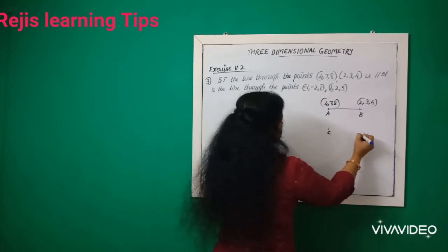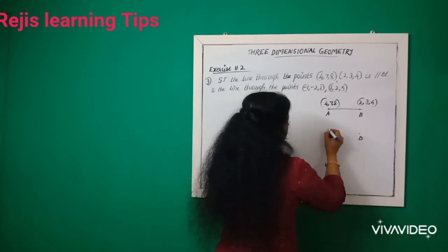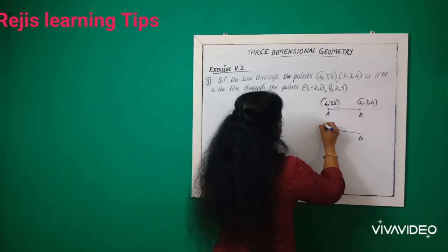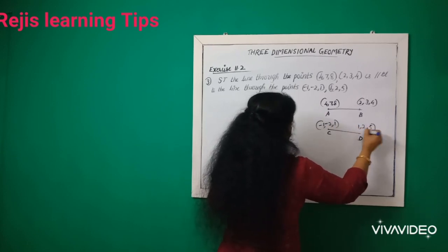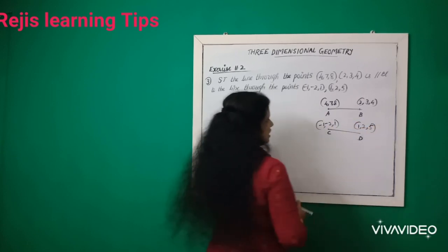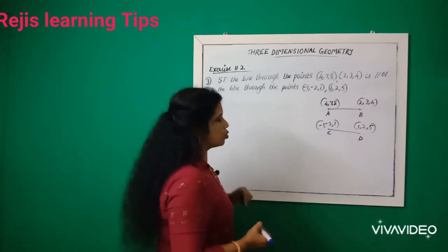We represent C and D as the second pair of points. C is (-1,-2,1) and D is (1,2,5). We will prove that AB is parallel to CD.